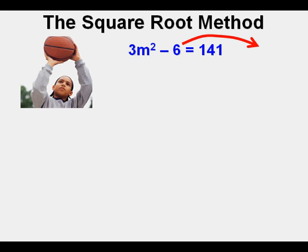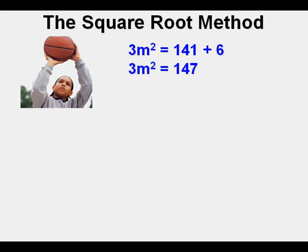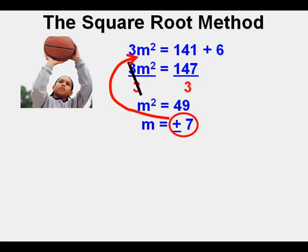Joe's first step was to clear the minus 6 on the left by adding 6 to the right side, giving 3m squared equals 141 plus 6, which simplifies to 3m squared equals 147. He divides both sides by 3 and cancels, leaving m squared equals 49. Since 49 is 7 times 7, m equals plus or minus 7. Substituting plus or minus 7 back into the original equation confirms the answer is correct, and Joe boxes in his answer: m equals plus or minus 7.